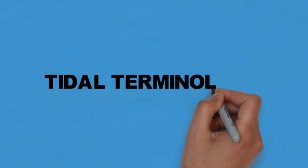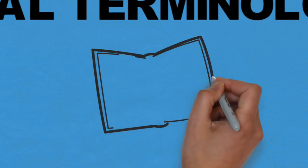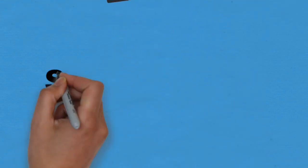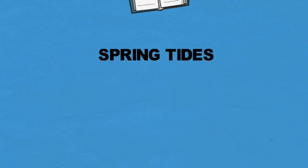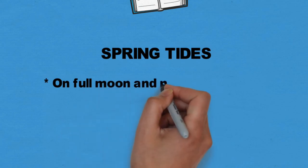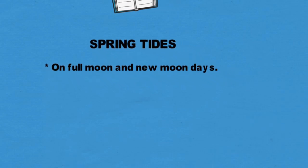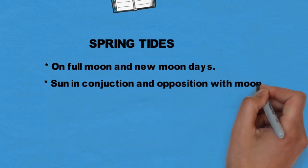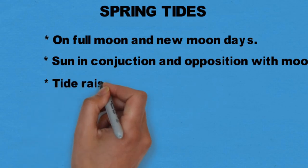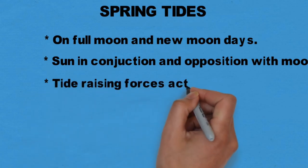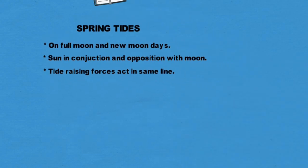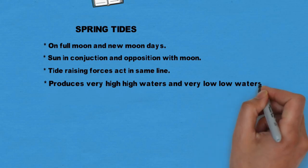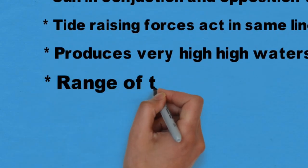Now let's look at tidal terminologies. There are different terminologies used in tides which you will see on your charts. Spring tides occur on full moon and new moon days, when the sun is in conjunction and opposition with the moon. The tide-raising forces are acting in the same line, which produces very high high-waters and very low low-waters, making the range of tide large.